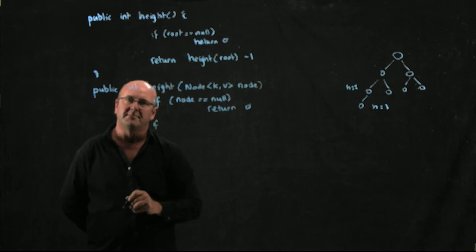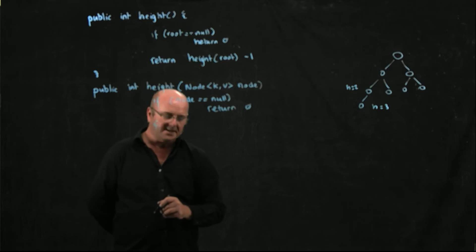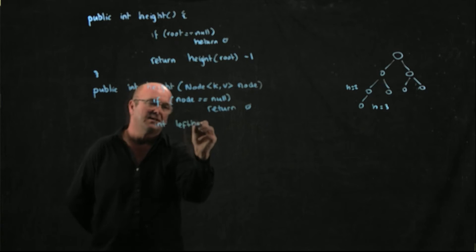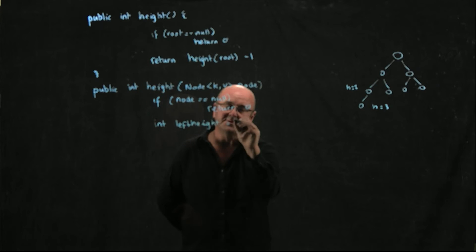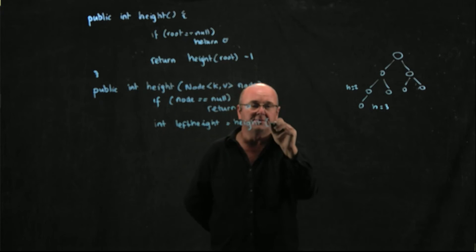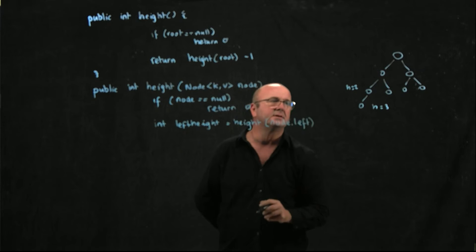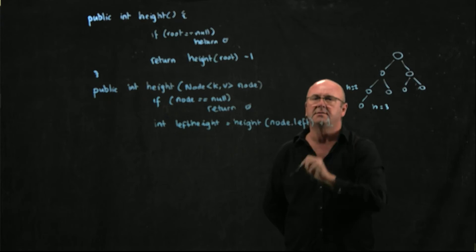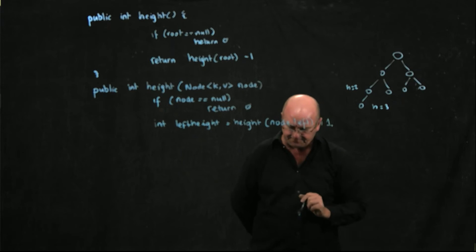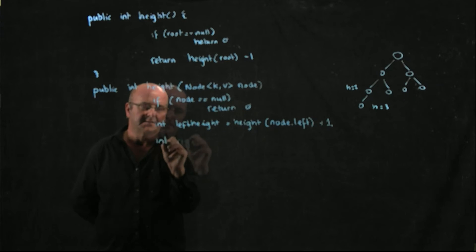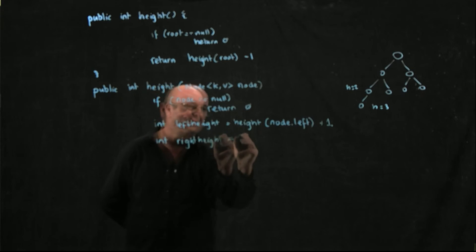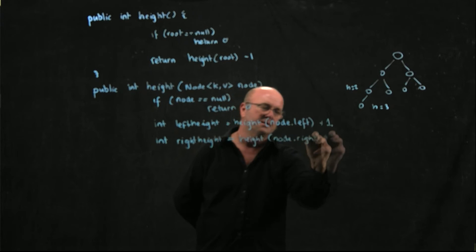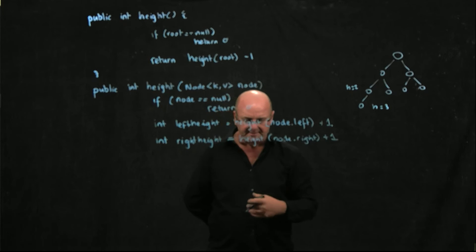Now what I need to do is I need to get my left height and my right height, so I'm going to say int leftHeight is equal to the height at node.left, so the height at node.left plus 1, plus 1 for the edge that I'm at. And int rightHeight is height at node.right plus 1, plus 1 for the edge that I'm at.